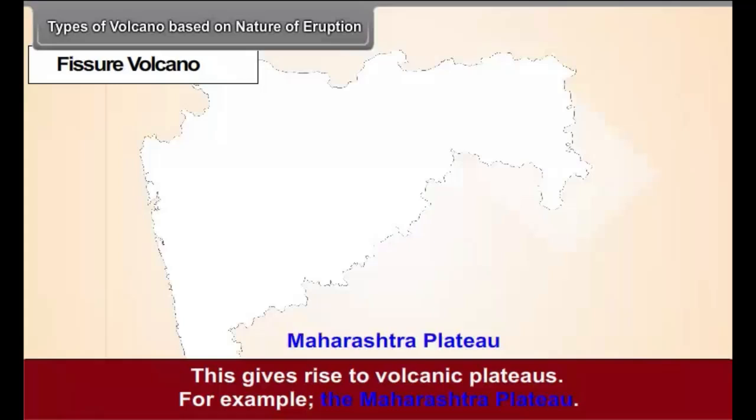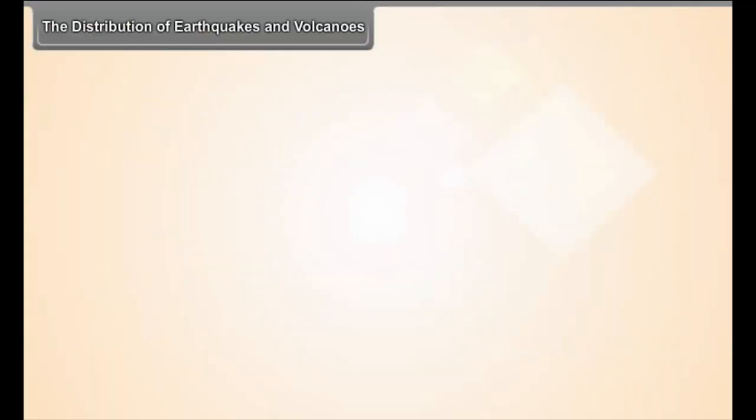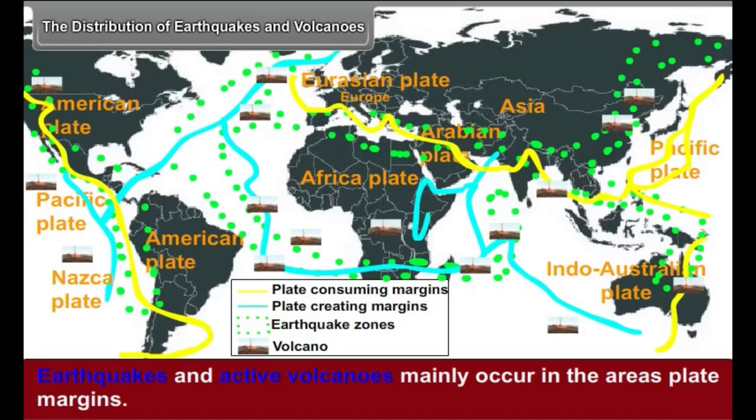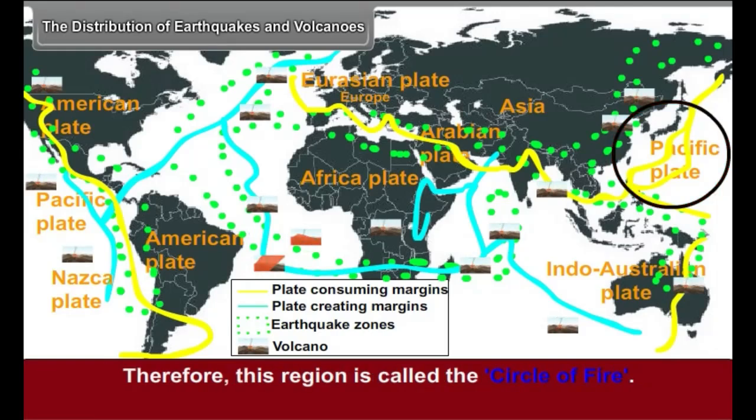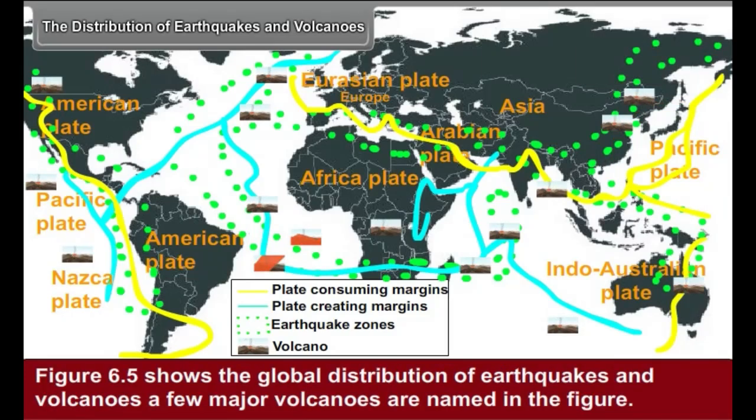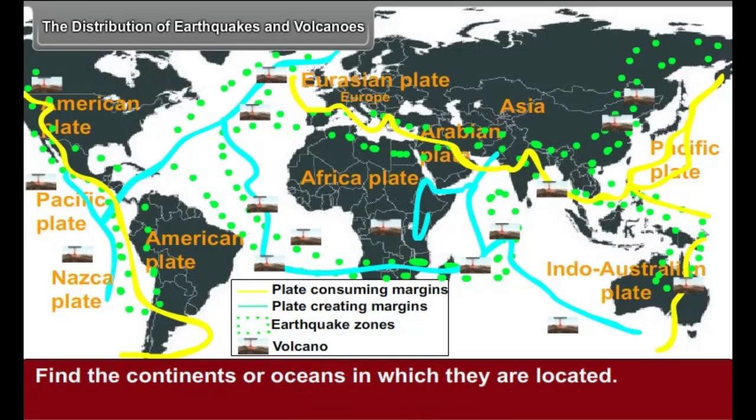The Distribution of Earthquakes and Volcanoes. Earthquakes and active volcanoes mainly occur in the areas of plate margins. Active volcanoes are mainly distributed around the Pacific Ocean. Therefore, this region is called the Circle of Fire. Figure 6.5 shows the global distribution of earthquakes and volcanoes. A few major volcanoes are named in the figure. Find the continents or oceans in which they are located.